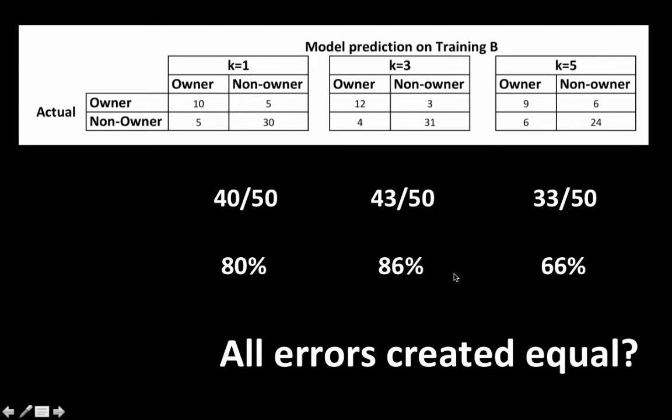But are all errors created equal? The cost of classifying an owner as a non-owner may be different from the cost of classifying a non-owner as an owner. Take a concrete example: suppose you classify somebody as an owner and send them a brochure. The brochure may cost you 50 cents or a dollar. If you classify a non-owner as an owner, you send the brochure to them and incur the cost of mailing — a dollar or two dollars — and they're not going to buy your product.